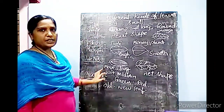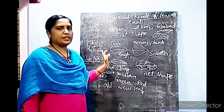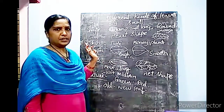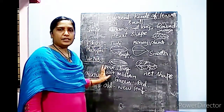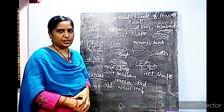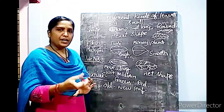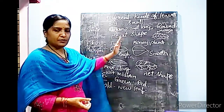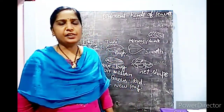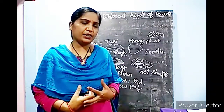So you have learnt how to differentiate the leaves based on their size, based on their shape, based on their margins, based on their veins, and based on their texture. Make sure you understood. Now, you go through the textbook and read the lesson about the different kinds of leaves, and we will see if there is any other way leaves are different.